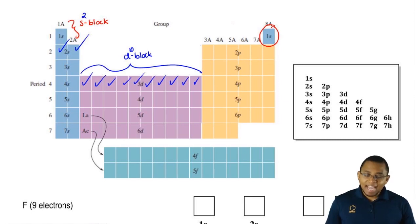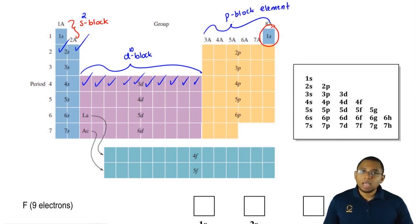Here, 3A to 8A, excluding helium, they're called the P block. These are our P block elements. And how many electrons can the P hold? P orbital can hold up to six electrons. One, two, three, four, five, six.